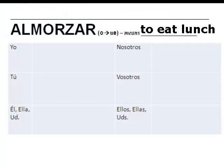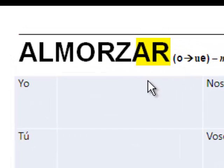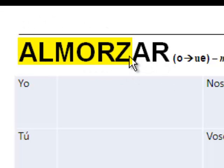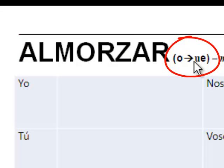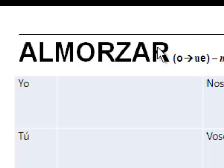First let's talk about what a stem is. Let's start by looking at the verb almorzar, to eat lunch. You'll see that it ends in 'ar'. Remember that all verbs in Spanish end in ar, er, or ir. That's the part that usually changes when we do our conjugating. What we're left with, if we were to drop that ending, is called the stem. In this case, when we learn the verb, we see an 'o to ue' notation. That shows us that in the stem, the o is going to change to 'ue' when we start conjugating it.